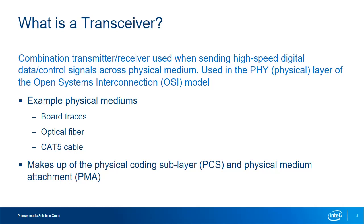As part of the physical layer, transceivers serve as the interface between the digital realm and the analog transmission domain. Depending upon your physical medium and the high-speed protocol you want to support, you may require specific features from your transceiver. Some application-specific standard products or ASSPs, designed to support select applications or protocols, implement only certain transceiver features. Since FPGAs are designed to be generic and support a wider range of protocols, their transceivers are much more configurable. The transceiver makes up two sub-layers of the physical layer: the Physical Coding Sub-layer or PCS and the Physical Medium Attachment or PMA.